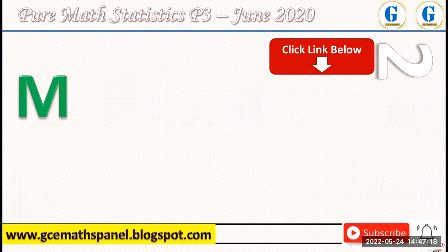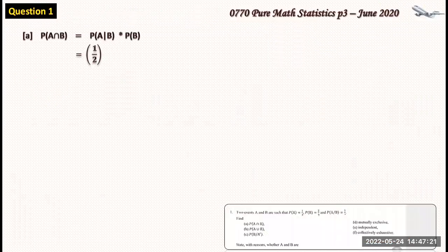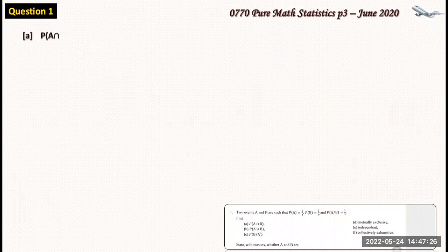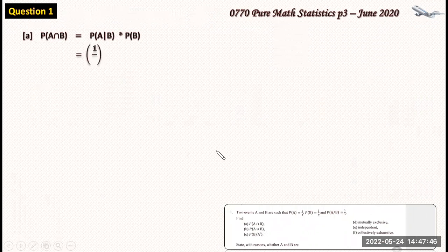The first part asks for the probability of A intersection B. We have been given the probability of A given B, so we use the formula: P(A∩B) = P(A|B) × P(B). This gives us one half times two over nine — wait, P(A|B) is one over three, so we have one third times two over nine, which gives us one over nine as the answer.